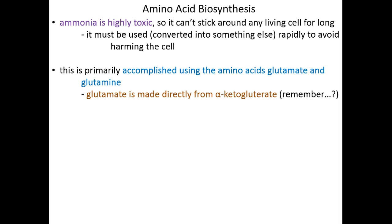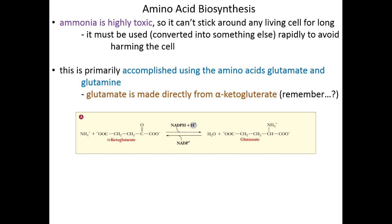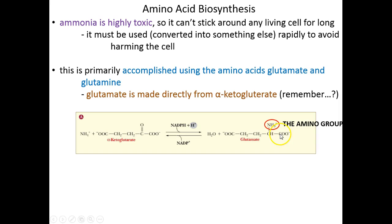Glutamate is made directly from alpha-ketoglutarate — hopefully that rings a bell, that's an old buddy from the citric acid cycle. Alpha-ketoglutarate is made into glutamate through the addition of ammonia. Here is alpha-ketoglutarate, here is a single ammonia ion, and with a little bit of energy from our high-energy electron carrier NADPH, we can go ahead and make glutamate and lose a water. We're removing a water molecule and substituting it with an ammonia molecule, converting toxic ammonia into non-toxic glutamate. That ammonia becomes the amino group of the amino acid.